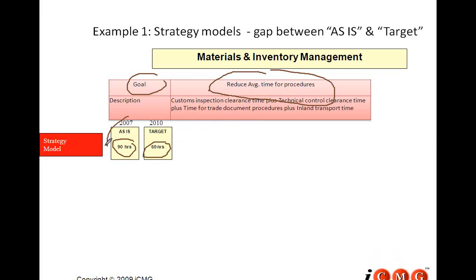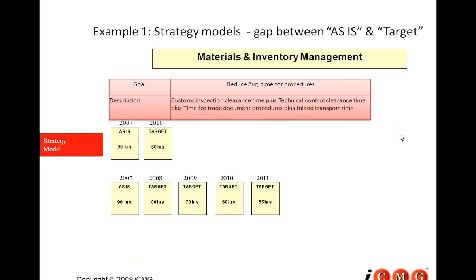Similarly, can I further break it down year-wise — by 2007, 2008, 2009, 2010, 2011? So 90 hours and 60 hours are not going to happen overnight. In 2007 and 2008 — 80 hours, then 70 hours, then 60 hours, then 55 hours and so on. I could break it down to more precise targets.